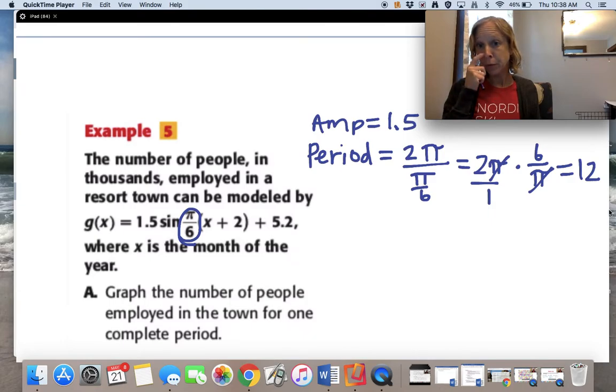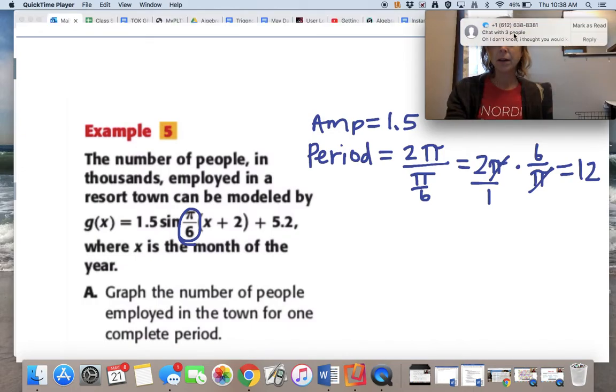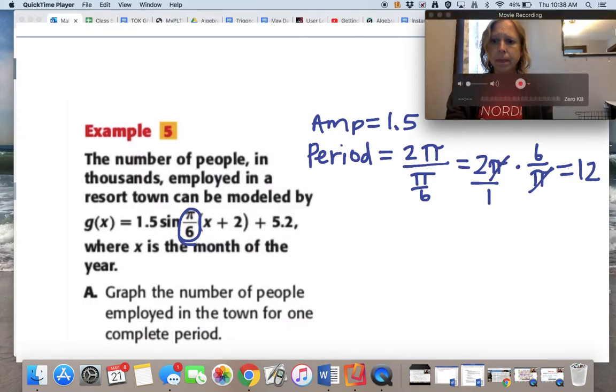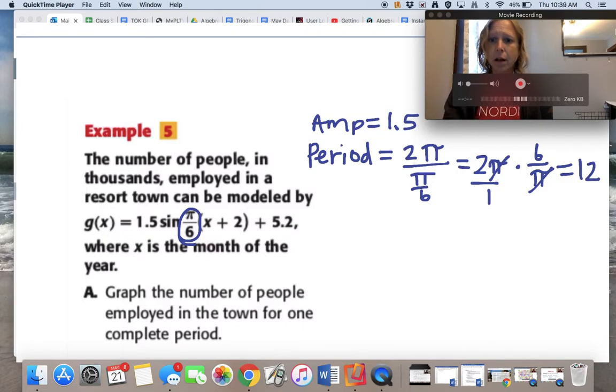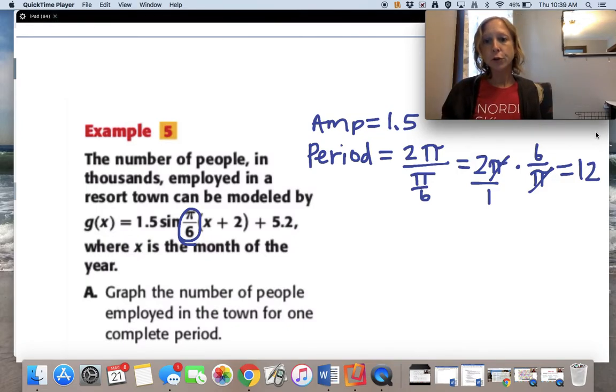So this one will look a little bit different than our previous ones because we're starting, we're going to have this period that's going to be 12, and all of our other periods before have been 2π, π, π over 2. So we're going to label our x-axis a little differently.